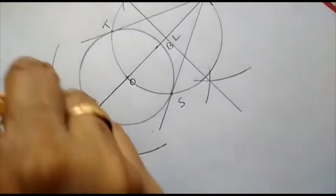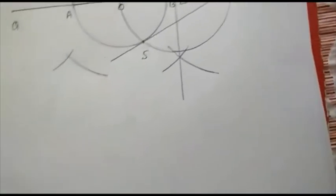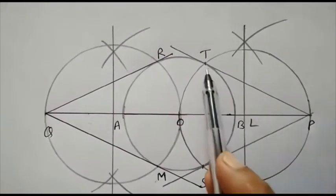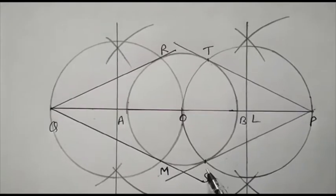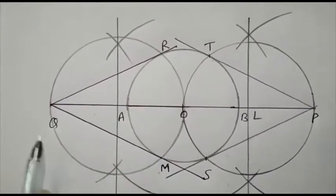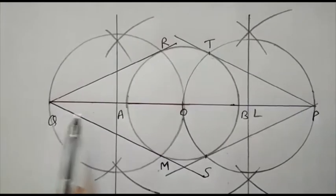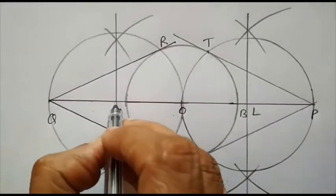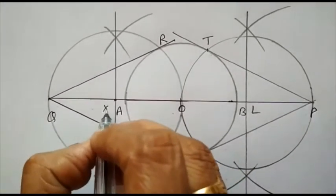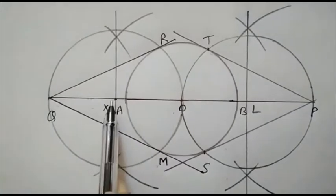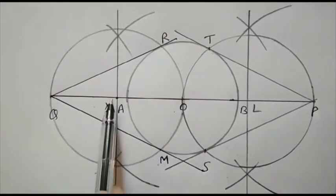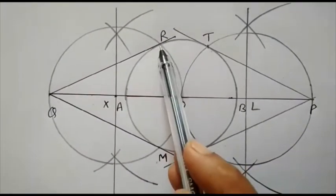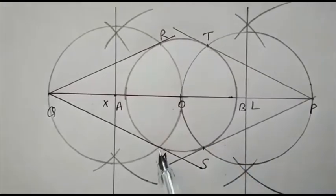Perpendicular bisector of OQ. So as from point P, we have drawn tangents PT and PS, same process will be followed on this side. From Q, I want to draw the tangents. Let this is the midpoint X. With X as center and radius QX, draw another circle which intersects the previous circle at point R and point M.